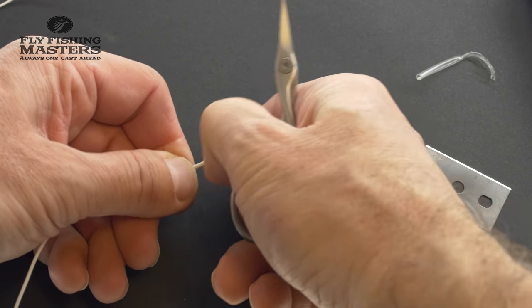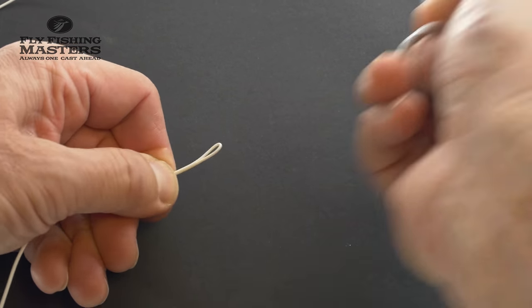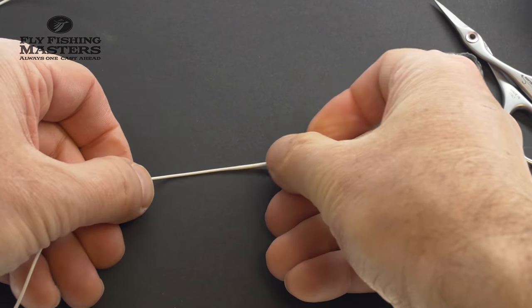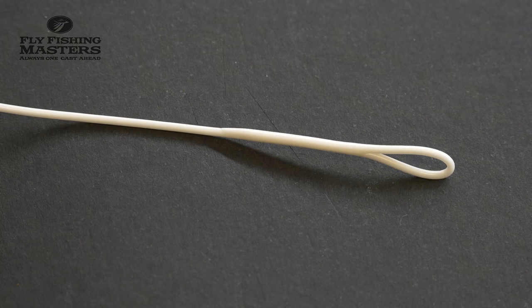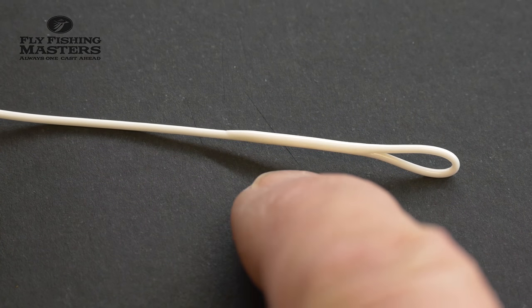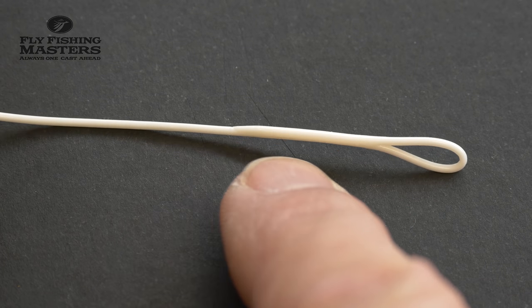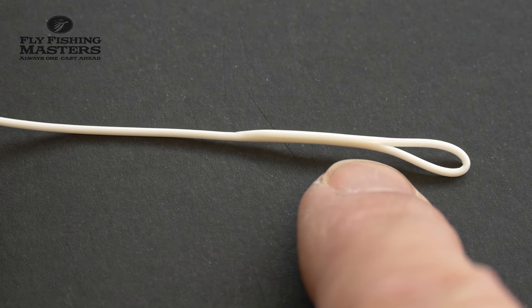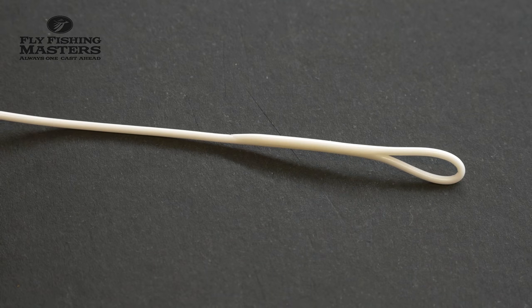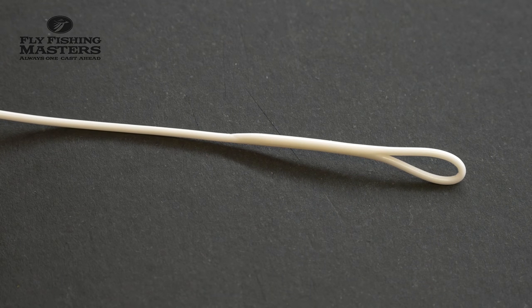There we go, a little more cutting and that's it, we're done. As you can see, the two fly lines have totally joined together and melted. There you have it, the perfect loop for your fly line.